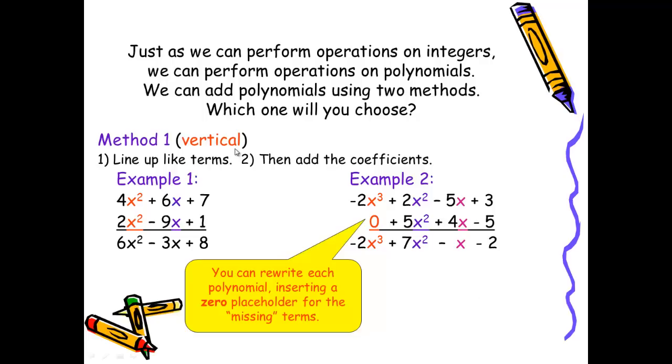Method 1 is the vertical method. In this case, we line up the like terms and then add the coefficients. In example 1, we have the first polynomial as 4x² + 6x + 7, and we are adding 2x² - 9x + 1. So we've lined up our terms in columns based on like terms. Then we add the coefficients. 4x² + 2x² is 6x². 6x + (-9x) is -3x. And 7 + 1 is 8.